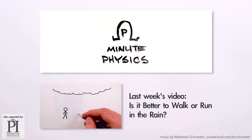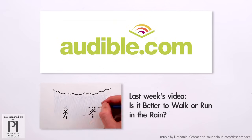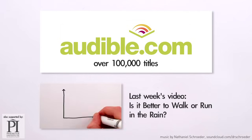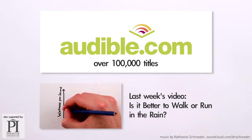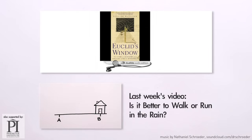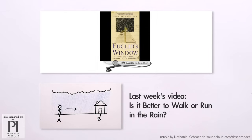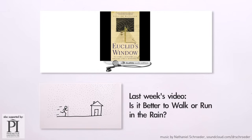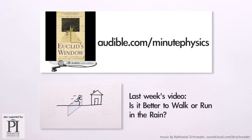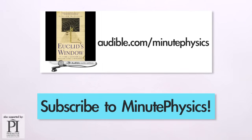This episode of MinutePhysics is supported by Audible.com, the leading provider of audiobooks across all types of literature, including fiction, nonfiction, and periodicals. If you want to learn more about the role of geometry in physics, you might want to check out Euclid's Window by Leonard Mlodinow. You can download this audiobook or another of your choice for free at audible.com/minutephysics. Again, thanks to Audible for making it possible for me to keep producing MinutePhysics, and for giving you a free audiobook at audible.com/minutephysics.